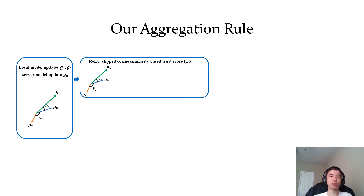Basically, ReLU sets a trust score to zero if the cosine similarity is negative, and keeps the cosine similarity as the trust score if it is non-negative. In our example, for client 1, we first compute the cosine similarity between g1 and g0, then we use ReLU to clip the cosine similarity to obtain the trust score.